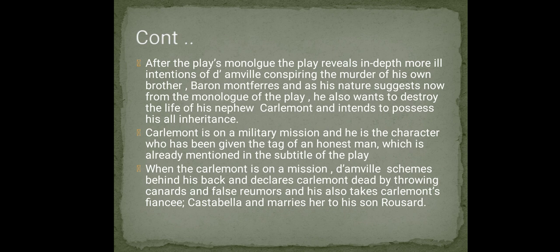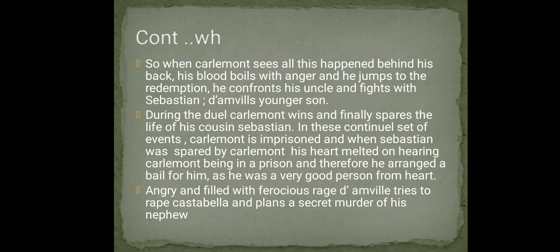When Charlemont is on his mission, D'Amville schemes behind his back — declares Charlemont dead by throwing false rumours, and marries Charlemont's fiancée Castabella to his son Roussard. When Charlemont discovers this, he confronts his uncle and fights with Sebastian, D'Amville's younger son. During the duel, Charlemont wins but spares Sebastian's life. Charlemont is then imprisoned, but Sebastian, whose heart melted at Charlemont's mercy, arranges bail for him — showing Sebastian is a good person at heart.